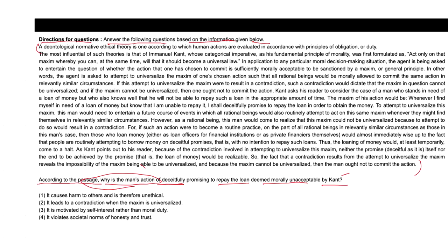If you look at the first choice, it stated: it causes harm to others and is therefore unethical. So this choice suggests that the action is wrong because it harms others. However, Kant's reasoning is not based solely on harm, but on whether the action can be universally applied without contradiction. Hence, option one cannot be the answer here.